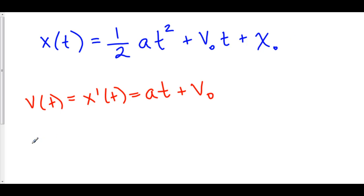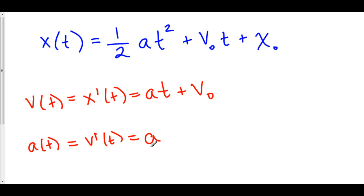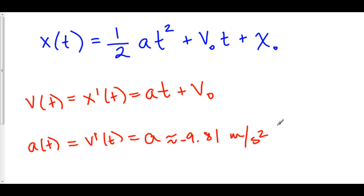If you take one more derivative, acceleration is equal to the derivative of velocity. The derivative of at, since a is a constant, is just a. And the derivative of v-naught is zero because v-naught is a constant. So our acceleration is constant, and it is a. In real life, why would acceleration be constant? The reason is because gravity is always pulling down on us, and usually we use that in meters per second squared — approximately 9.81 meters per second squared. But since it's going down, we call this negative 9.81 meters per second squared. So given gravity as a constant force, you can find the velocity function and the position function if you were to go up the ladder. We'll talk about that more in applications of integrals.